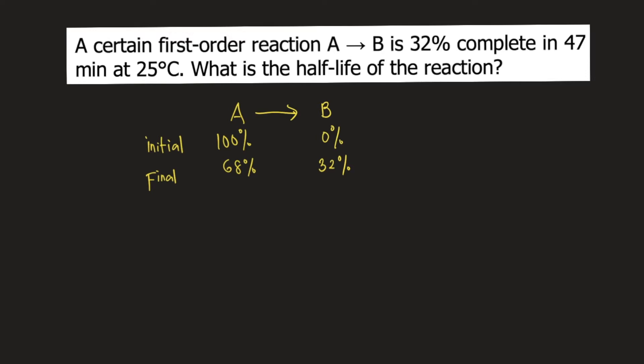Then we will use the following equation for first-order reactions: ln of A is equal to ln of A0 minus Kt. Let's define the terms here. A is the final amount of reactant.